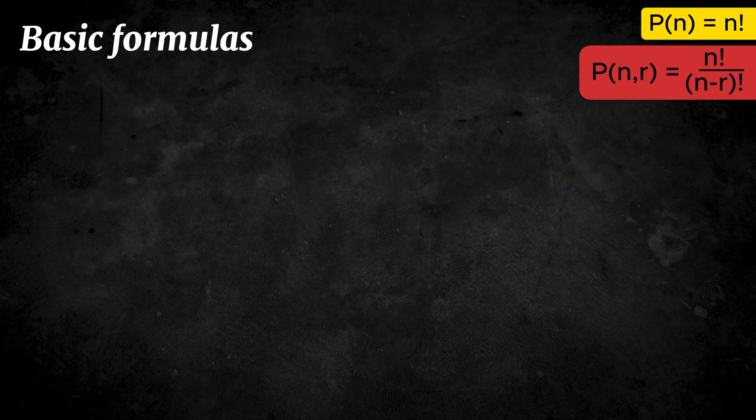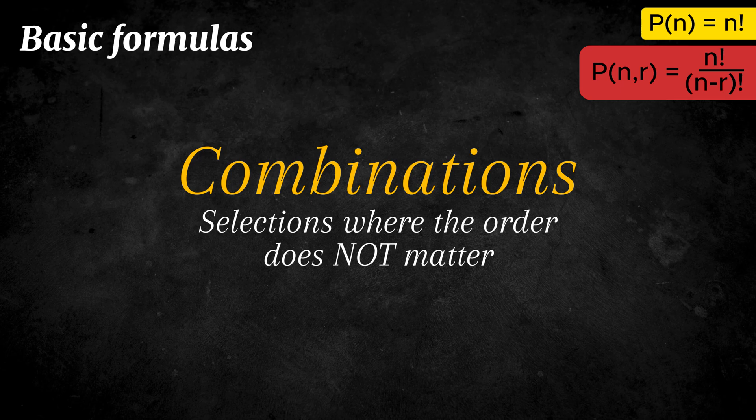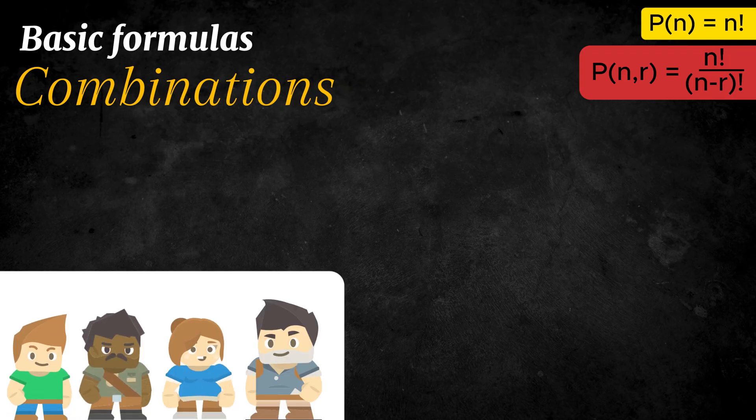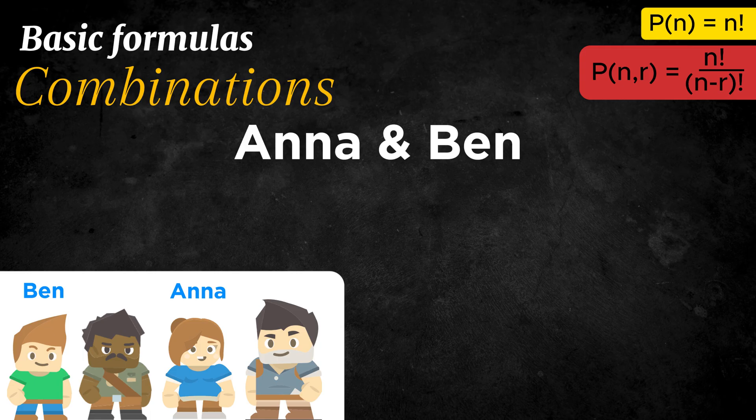Next, we have combinations, which are selections where the order does not matter. For example, suppose you want to choose two friends from a group of four to form a team. Choosing Anna and Ben is the same as choosing Ben and Anna, so we only count once.